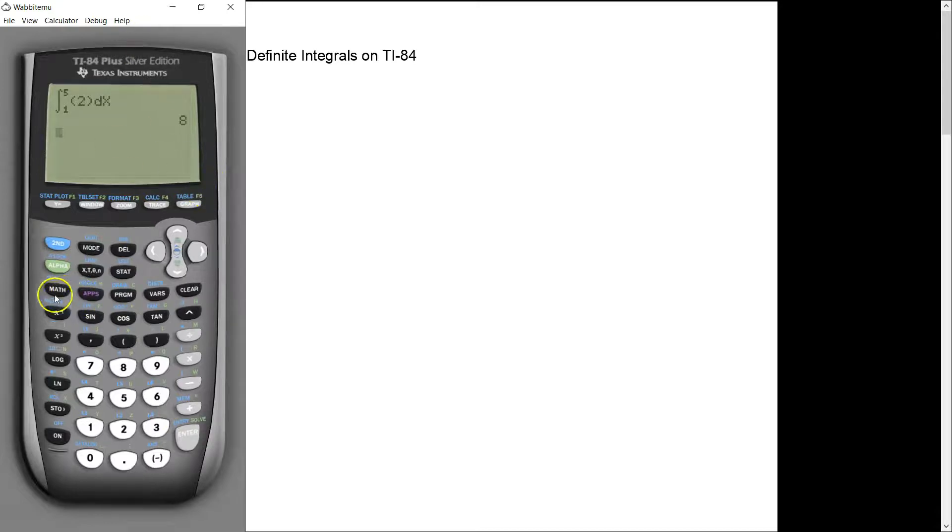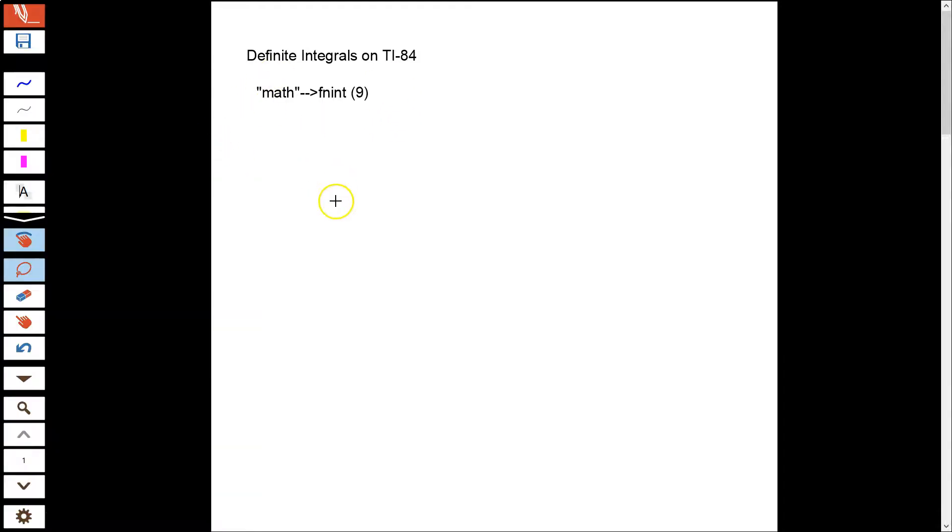So those are the steps. Again, it's math, and then fnInt number 9. And then you type in exactly kind of what you'd want, how we'd expect it. Okay? So let's try some problems. That's pretty easy, right? And then we can tackle some more interesting things here in a second. So here are your keystrokes. Here are what our problems are going to look like.